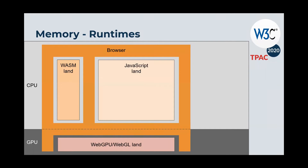The browser needs to deal both with CPU memory and GPU memory, and it has to manage different internal isolated runtimes. In the browser you have the JavaScript land, the WebAssembly land, and the WebGL and WebGPU land. JavaScript land and WebAssembly land are tied to CPU memory, while WebGL and WebGPU land are tied to GPU memory.